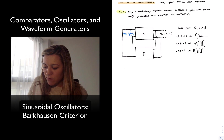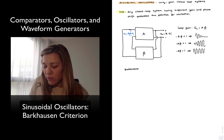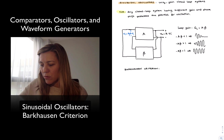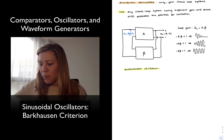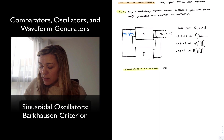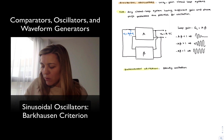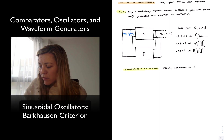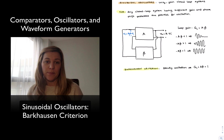That condition for sustained oscillation is typically referred to as the Barkhausen criterion for oscillation, in honor of the person who came up with it. The Barkhausen criterion basically tells us that in order to sustain a steady oscillation, it requires the loop gain G_L, or A times beta, to be equal to unity. That is the name — unity gain closed loop system.